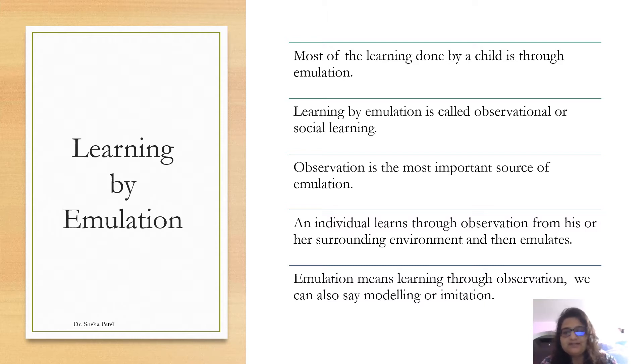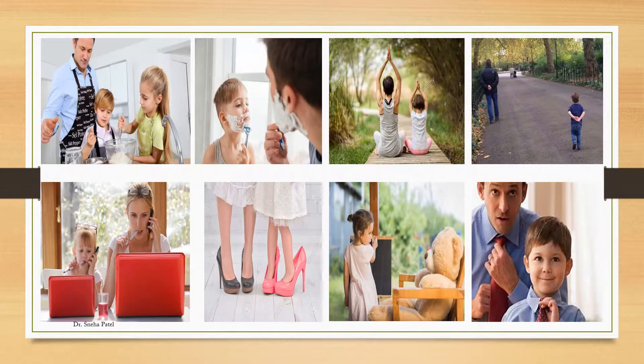We can also say modeling or imitation. The elders and the people around the child provide an example for the child to copy, to imitate, and in this way learning takes place. Children learn from the surrounding environment. They try to imitate their elders, parents, teachers, and all the people in their surrounding environment.